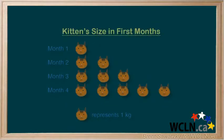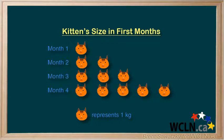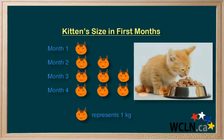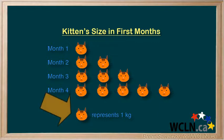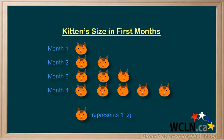In this example, we have a horizontal bar graph, but done with cat heads — a pictograph. The title tells us that we have a kitten who is growing up and getting heavier in their first four months. A legend is used at the bottom here to show that each cat head represents one kilogram of mass. We can definitely see that the cat is growing and it had a big growth spurt in the fourth month.